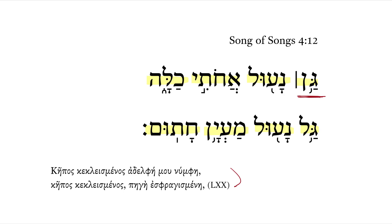So we have a garden here, and it's not just any garden. It is a garden that is locked. The verb here is nun-ein-lamed, meaning 'to be locked,' and we have a passive participle. Notice the shurik of the passive participle, and also notice the parallelism — we're going to see this same word occur in the next line.